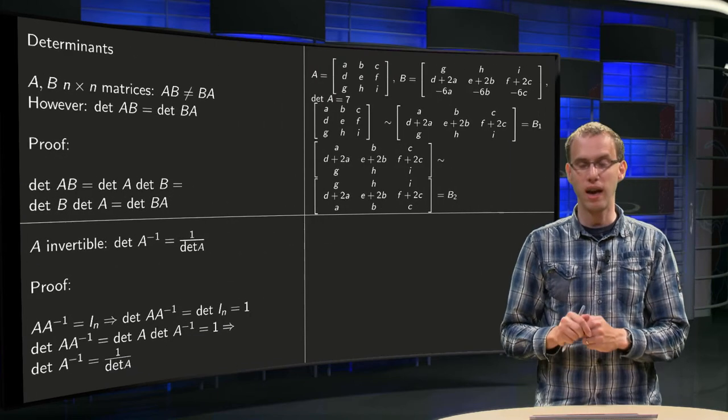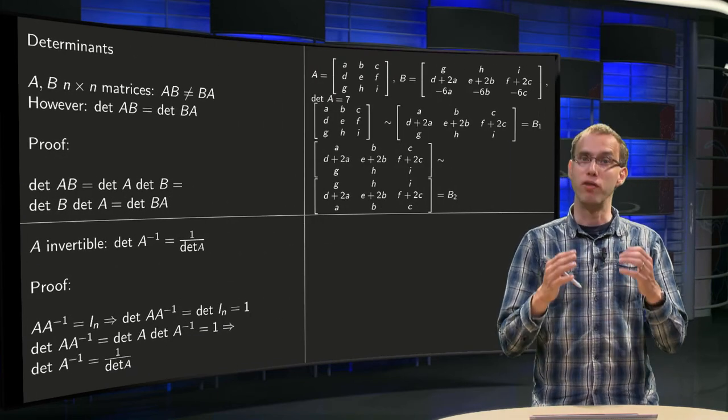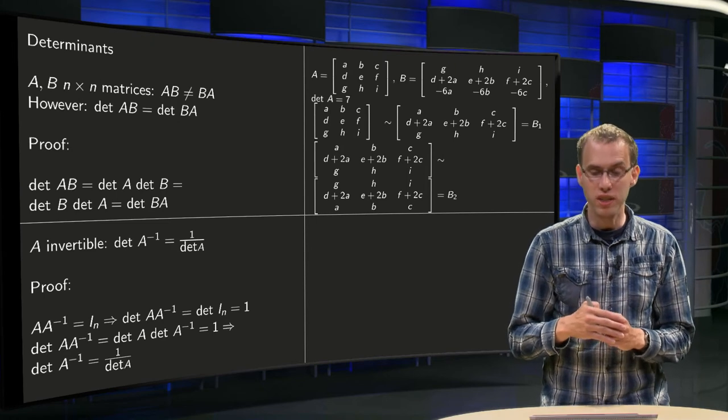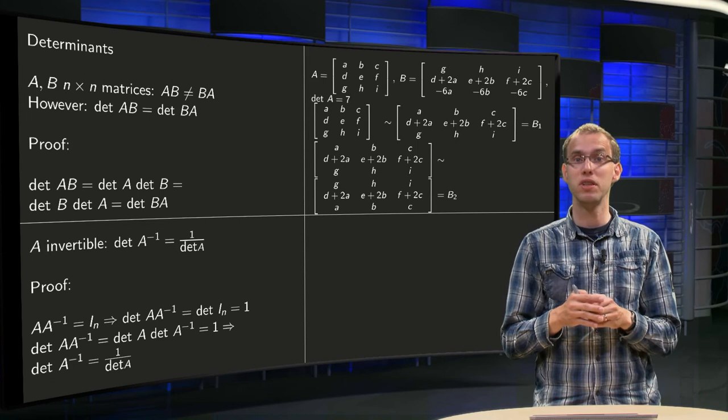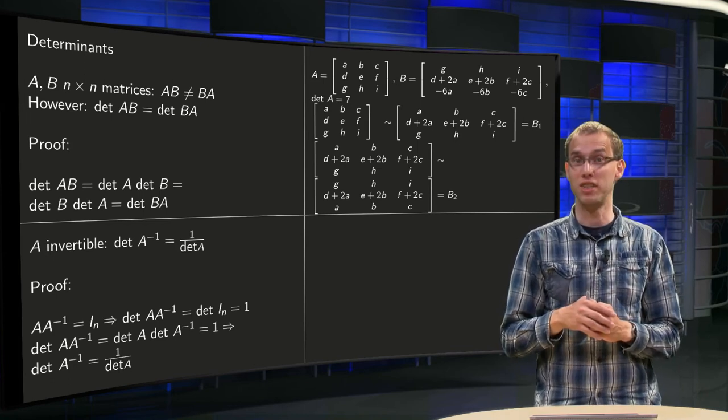Let's go to the example. Well, this example looks horrible. We have a matrix with entries A, B, C, D, E, F, G, H, I, with 9 parameters, and the only thing we know is that the determinant of A equals 7.